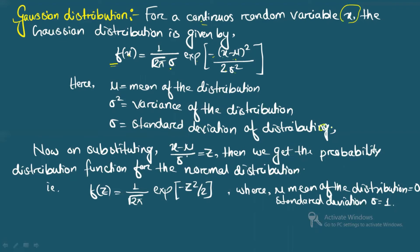When you substitute z = (x − μ) / σ, you get the standard form of the normal distribution: f(z) = (1 / √(2π)) · exp(−z² / 2). Here μ = 0 and σ = 1. You need to remember these two formulas to solve problems.